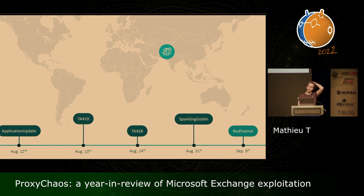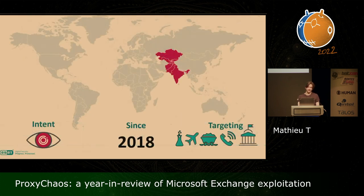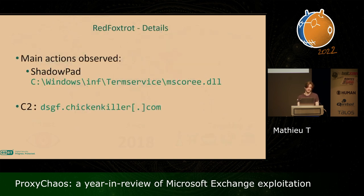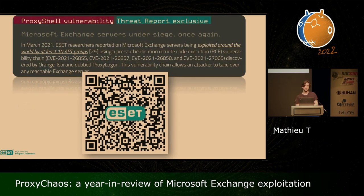Finally, one month after Orange Tsai's presentation at Black Hat USA, we observed Red Foxtrot targeting the Exchange server of an IT company in Pakistan, which is a country commonly targeted by Red Foxtrot. It's a cyber espionage group active since 2018. They target the research sector, aviation, mining companies, telecommunication operators, and governmental organizations, all based in Central Asia. On the compromised mail server, they tried to deploy ShadowPad. In that case, we were able to attribute that particular ShadowPad activity to Red Foxtrot because they reused a domain name they had used in previous campaigns. If you want to know more about the APT groups that exploited the ProxyShell vulnerability, you can have a look at the public threat report we published at the beginning of the year on WeLiveSecurity.